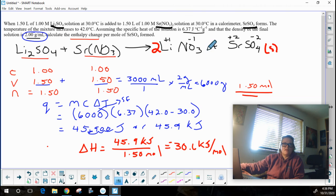So the heat lost by the reaction is going to be negative. Remembering that I'm trying to figure out how much heat was released when I made this stuff, which would be the heat gained by the 6,000 grams of solution. So the heat lost by the reaction was negative 30.6 kilojoules per mole.